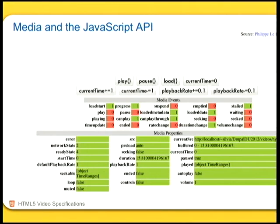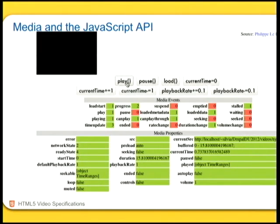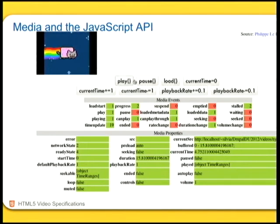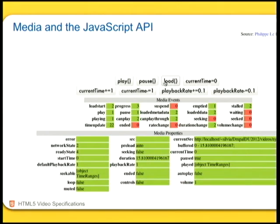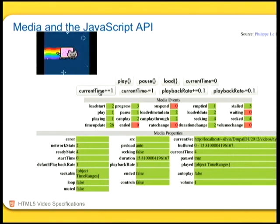There's this really nice page that Philippe Lehegeret from the W3C created, which displays all of the media events and media properties, and gives you buttons at the top for calling some of the functions. If I press the play button, the video plays — that's just calling exactly those functions. I can reload, and you see at the bottom how the media properties change and what events are being thrown in the middle. I can start playback at three or four seconds in — this is a test page for all these events, functions, and properties.